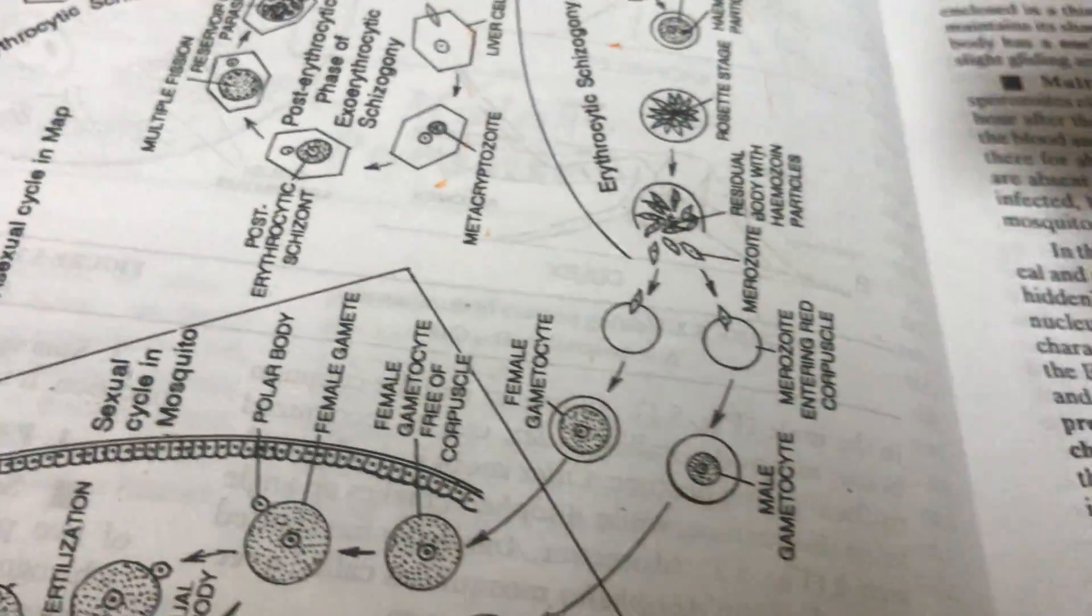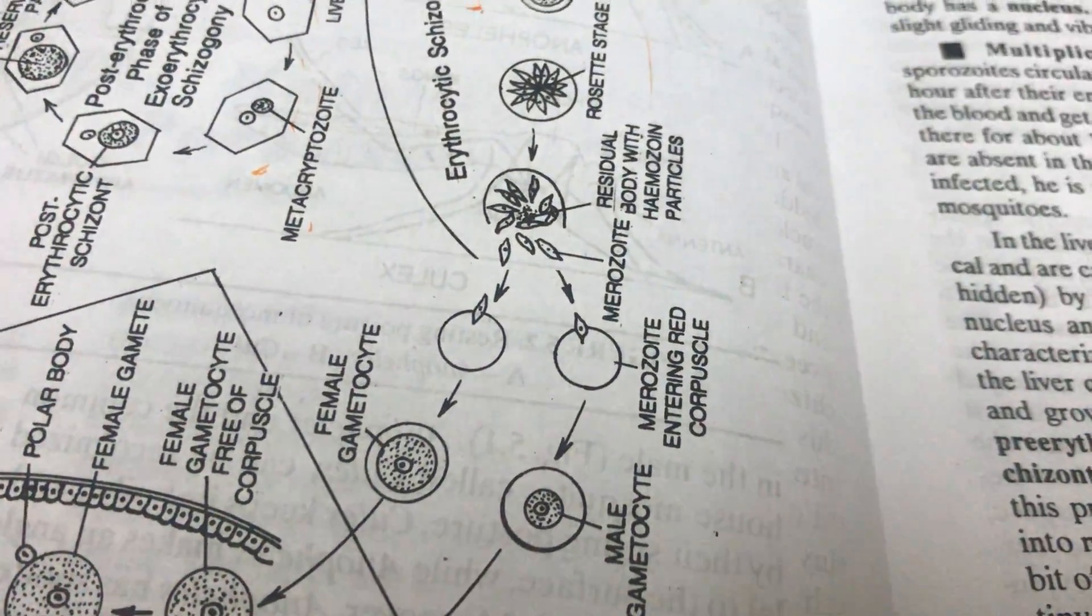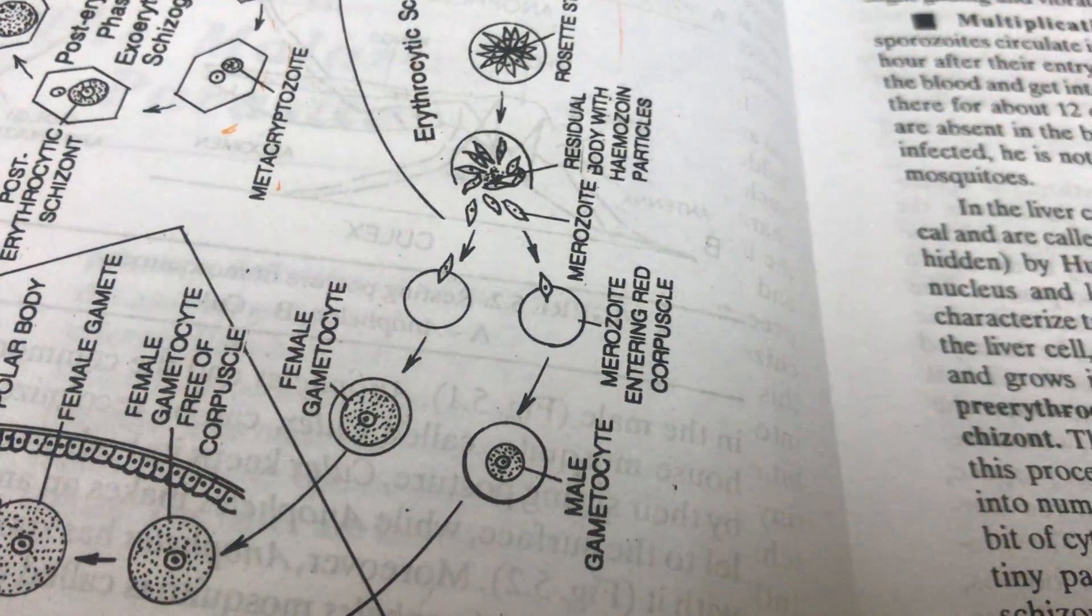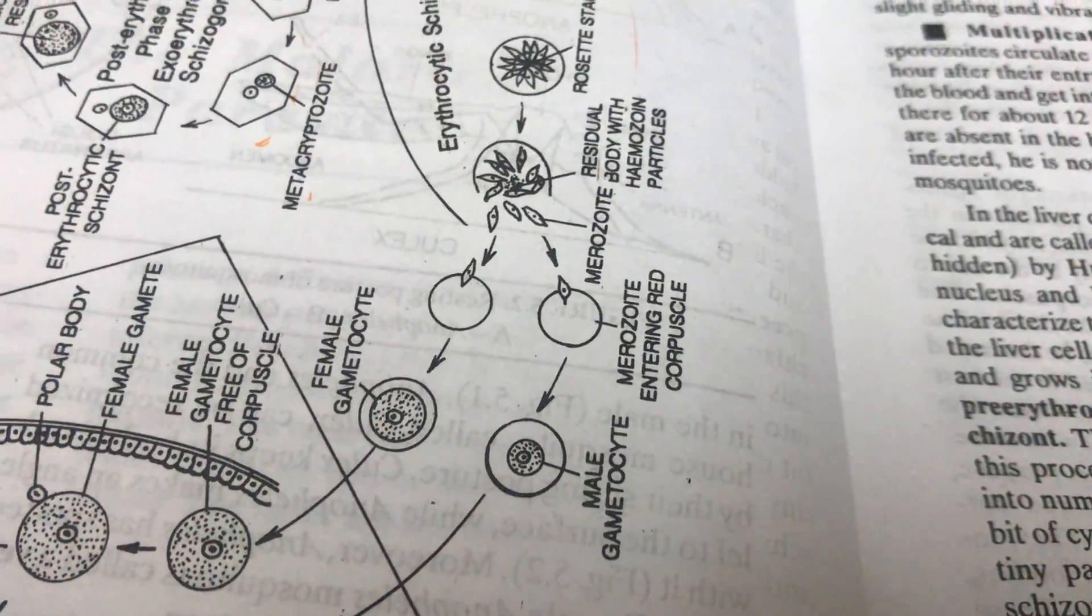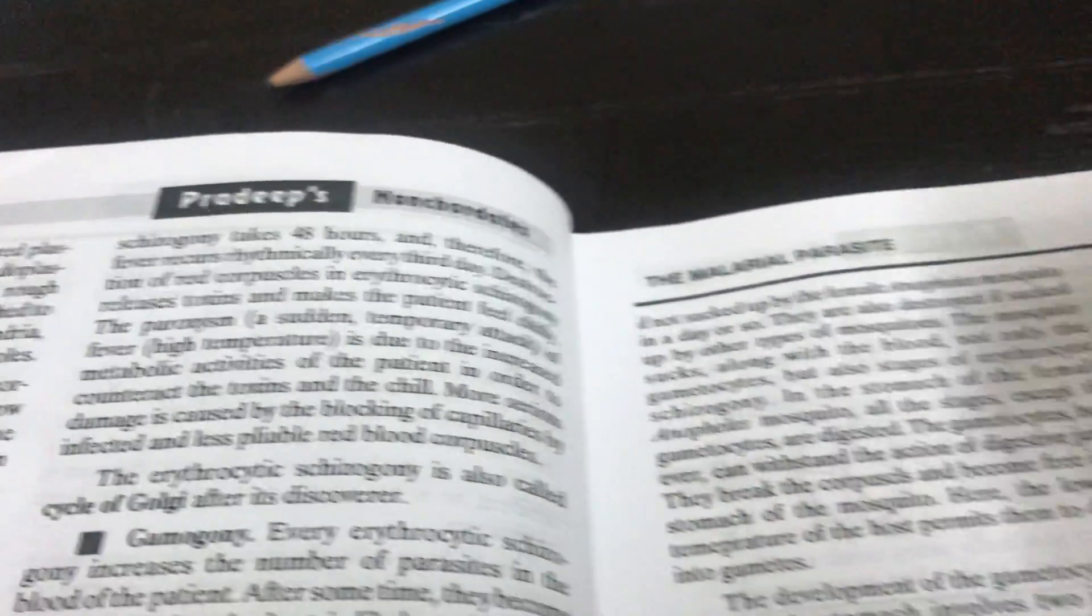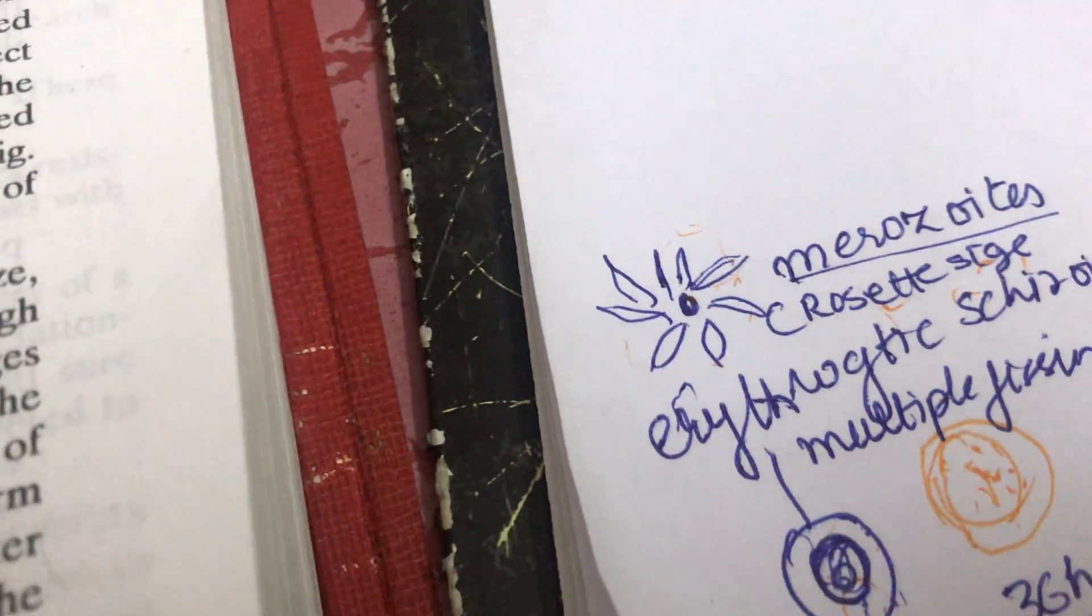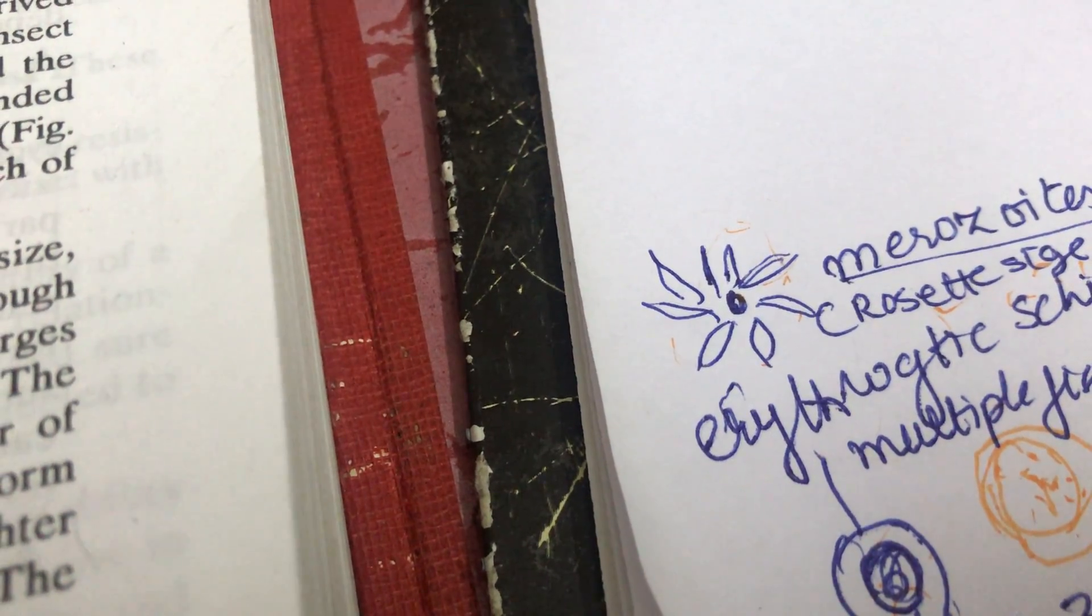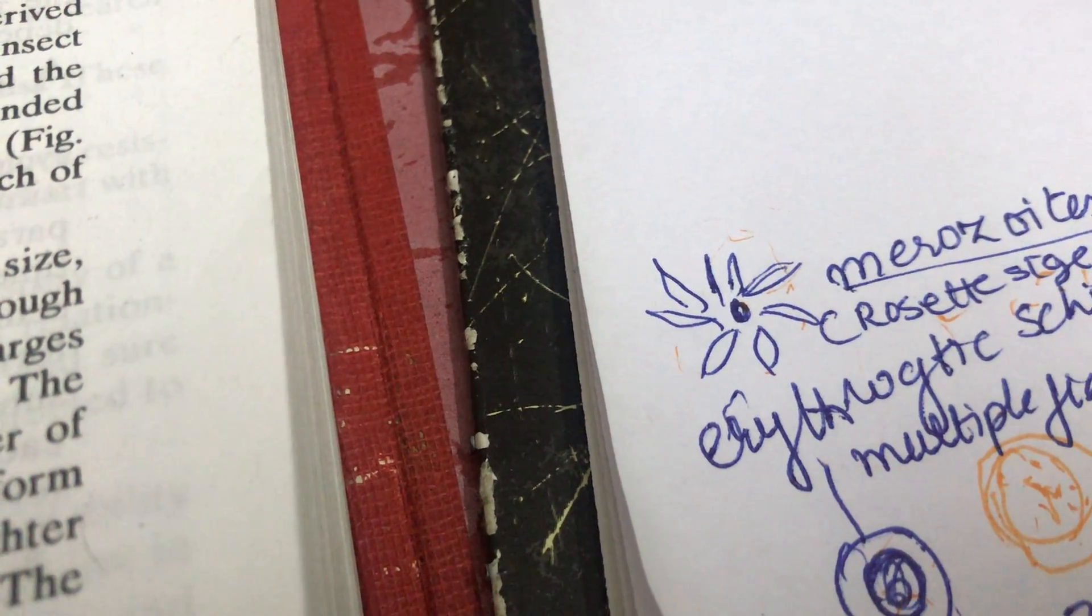The erythrocytic schizogony is also called the cycle of Golgi after its discoverer.